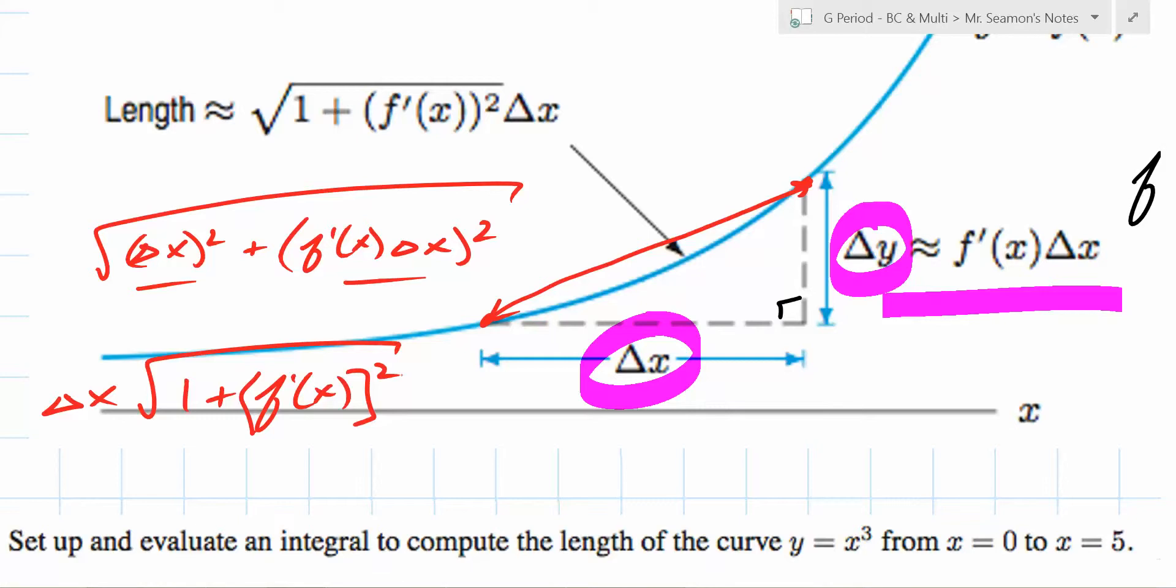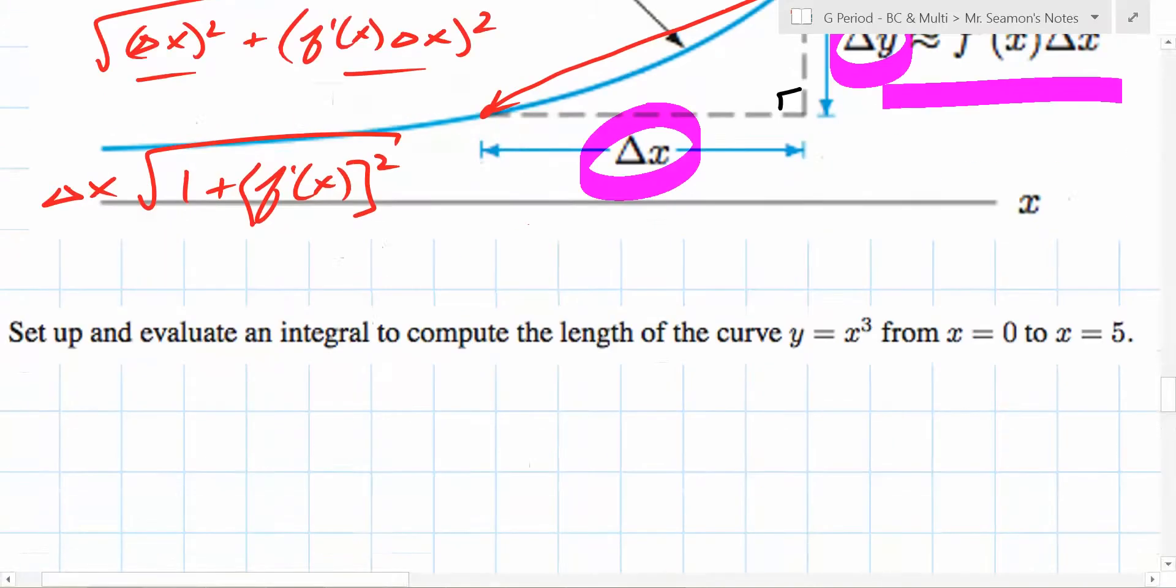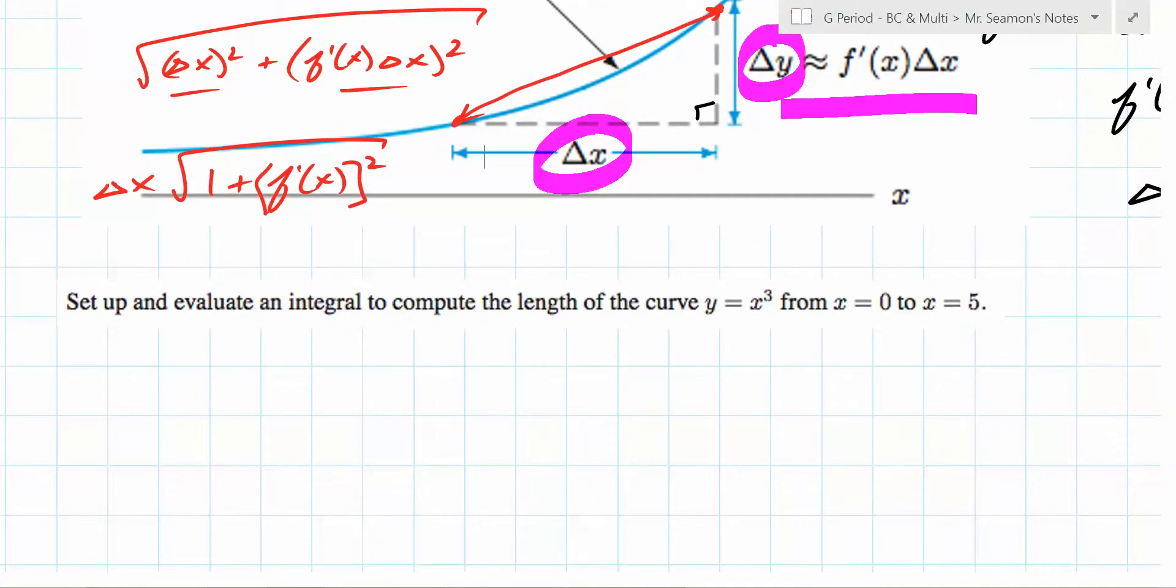So you remember when you added together an infinite number of rectangles to get an area? And you took that limit and it approached the actual area? The same thing is going on right now. So for example, let's just dive right in. Stay standing. Set up and evaluate an integral to compute the length of the curve y equals x cubed from 0 to 5. Anybody wants to take a random stab at what the integral is for this? Who wants to guess? Come on. Who wants to guess? It's an integral. 0 to 5. 0 to 5. Okay. Everybody's guessing. Excellent. Of what? 1 plus 3x squared squared dx. You've figured it out. That's it. Wicked cool.